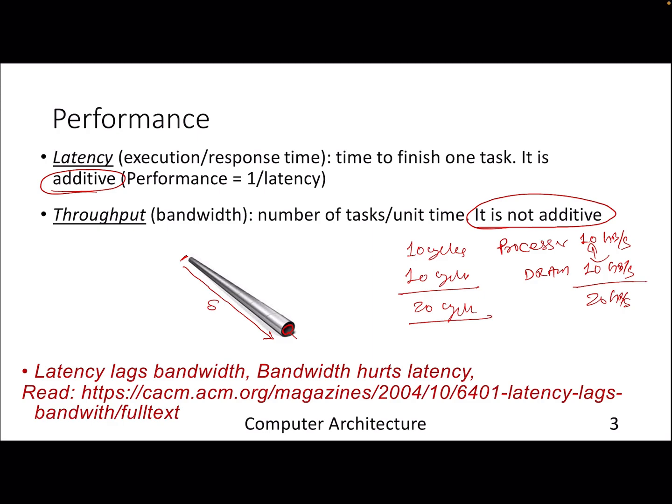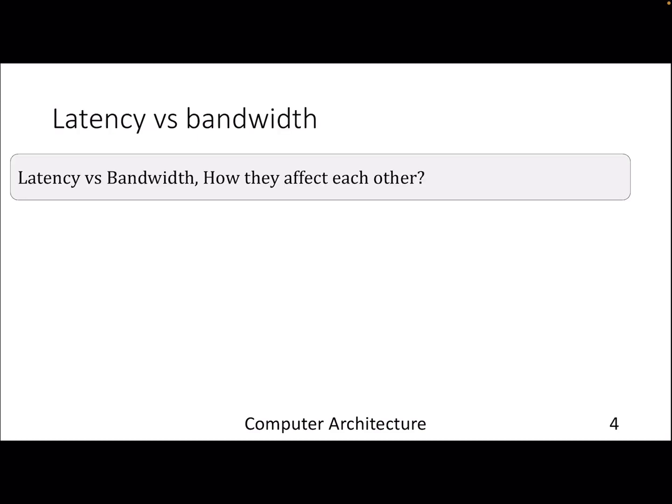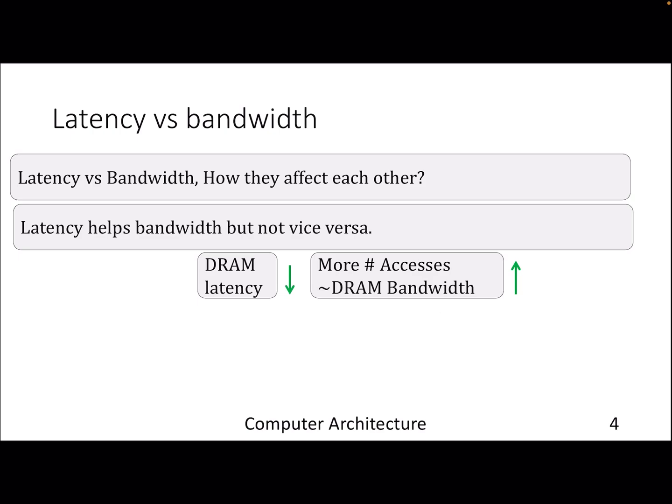I would suggest going through this particular link for reading various issues of interactions between latency and bandwidth. It's a good read, bit dated though, but nonetheless a good read. To understand how latency and bandwidth affect each other, let's take a simple example. In most cases, latency actually helps bandwidth. For example, if I'm improving my DRAM latency—let's say my DRAM latency drops from 100 to 50 cycles—I'm improving my bandwidth. I can respond more and more in less unit of time.